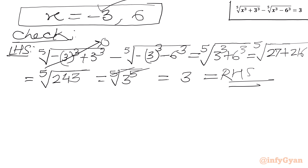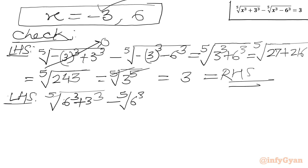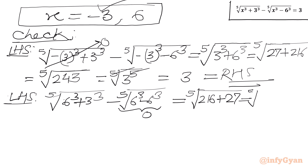Checking x = 6: LHS is fifth root of (6³ + 3³) minus fifth root of (6³ - 6³). The second radicand is 0, so that term vanishes. Fifth root of (216 + 27) = fifth root of 243 = fifth root of 3⁵ = 3, which equals the RHS. So x = 6 is also a verified solution. I hope you liked this video — thank you so much for watching, don't forget to like, share, and subscribe!